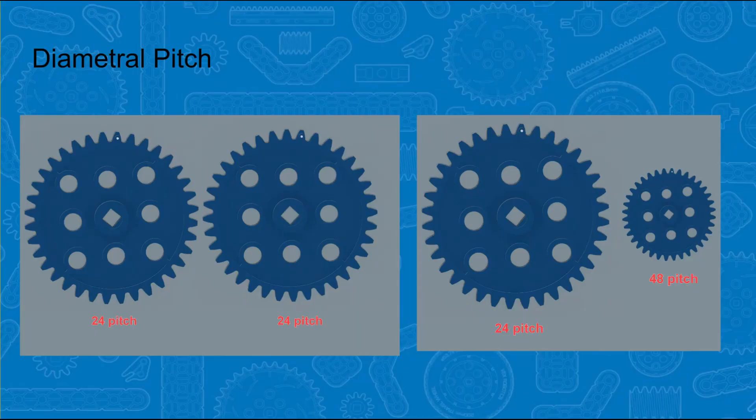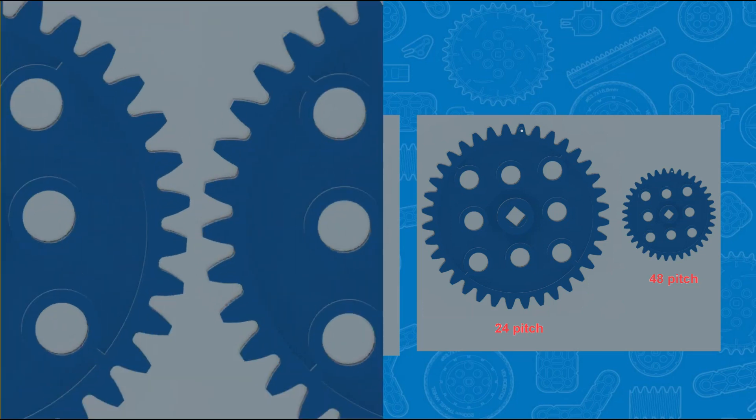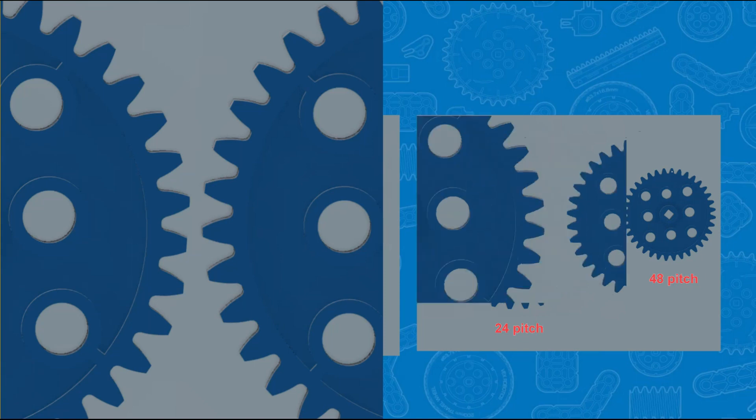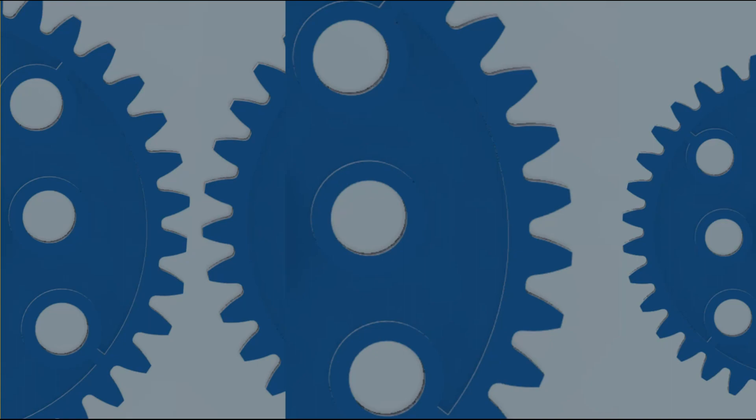In order for gears to work in a system, they must have the same pitch. As you can see with the two gears with a 24 pitch, they can have their teeth mesh. Whereas a gear with a 24 pitch and another gear with a 48 pitch, their teeth will not match up.